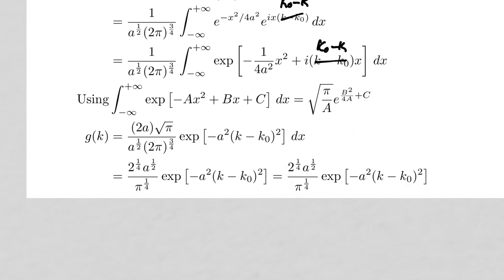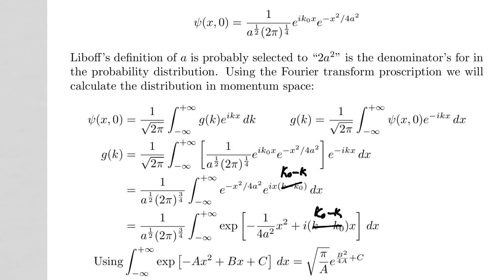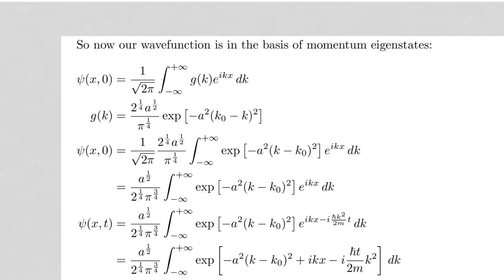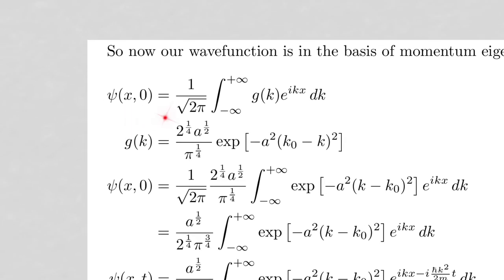The important result is that the inverse Fourier transform of a Gaussian is still a Gaussian — G(k) is a Gaussian centered at k₀ with width related to a. We can now rewrite the wave function integral substituting in our value of G(k), giving us the full form of the wave function as an expansion in plane waves.